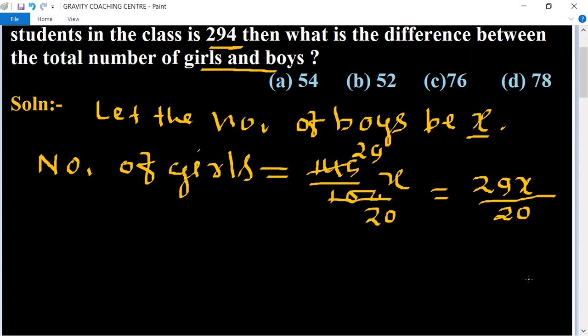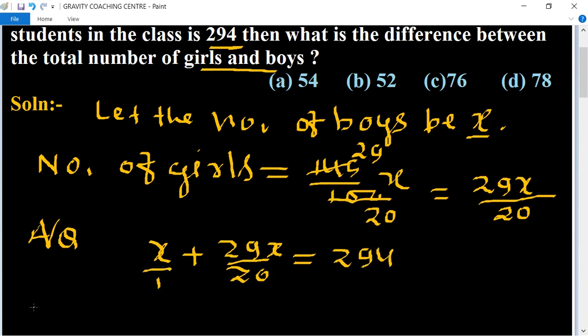And according to question, the total number of students is 294, so x plus 29x upon 20 equal to 294. Now we take the LCM, so LCM is 20.